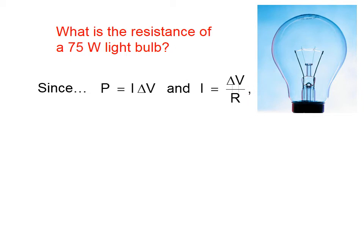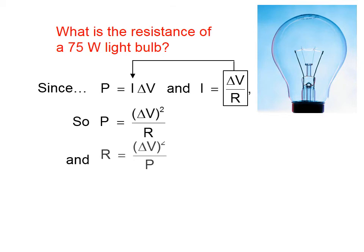What we're going to do is take delta V over R and put it in right there in place of that I. So that's going to give me delta V over R times delta V equals P. Now, we want to solve this for the resistance, because that's what's asked. I trust that you can manipulate that algebraically for the resistance.